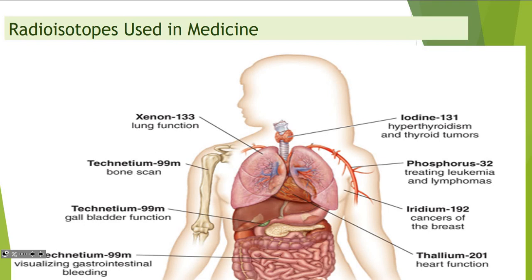Lymphomas — you have lots of lymph nodes throughout your body, like under your arms and different parts. So if cancers get into those, they start growing.